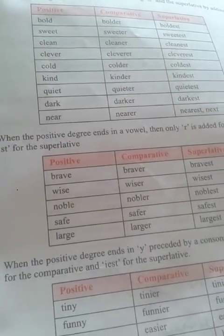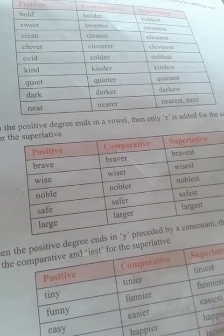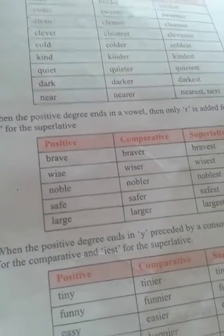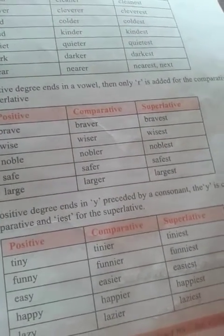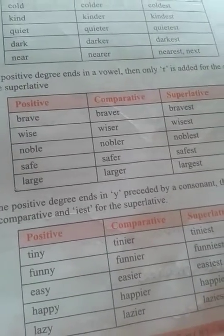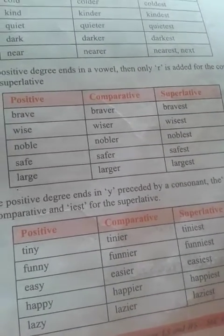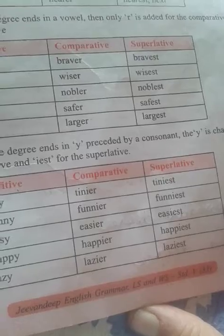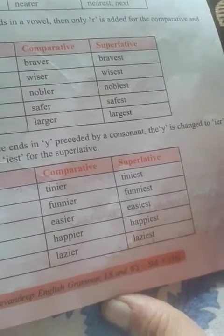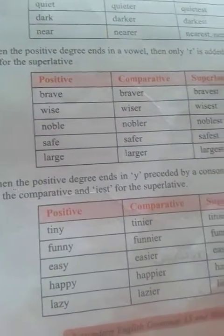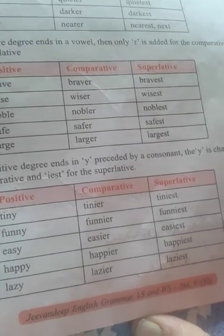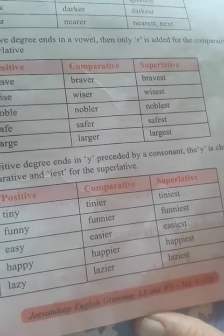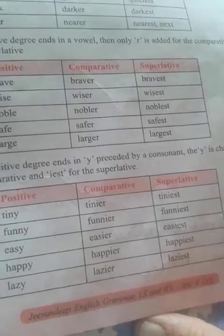When the positive degree ends in -y preceded by a consonant, the y is changed to i, then -er is added for the comparative and -est for the superlative. Examples: tiny, tinier, tiniest; funny, funnier, funniest; easy, easier, easiest; happy, happier, happiest; lazy, lazier, laziest.